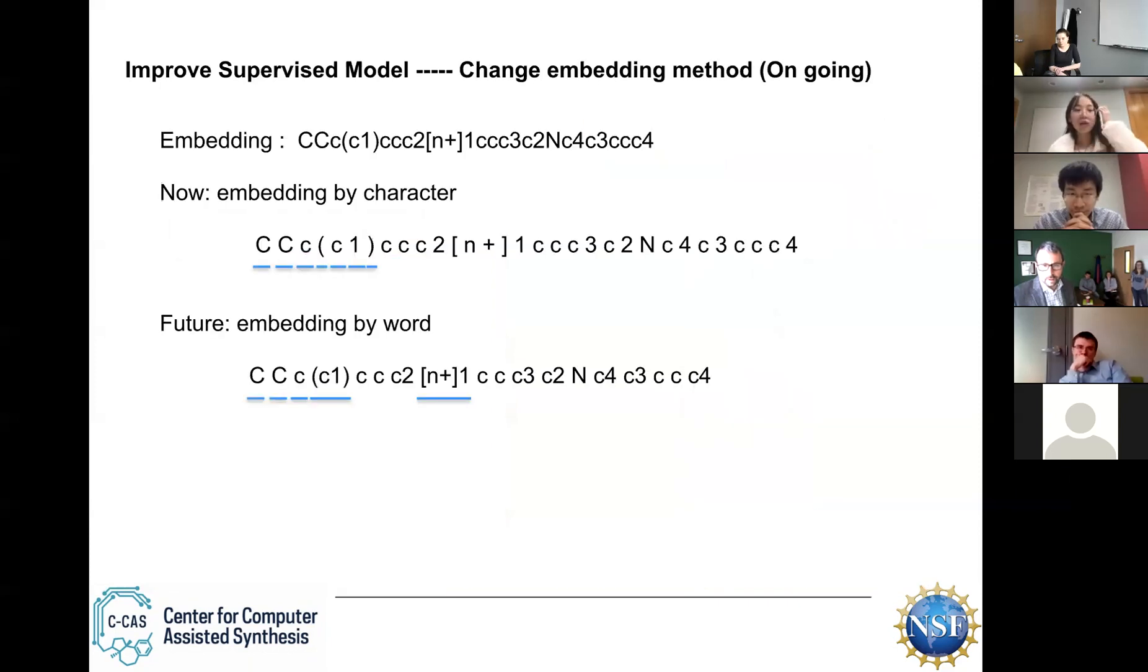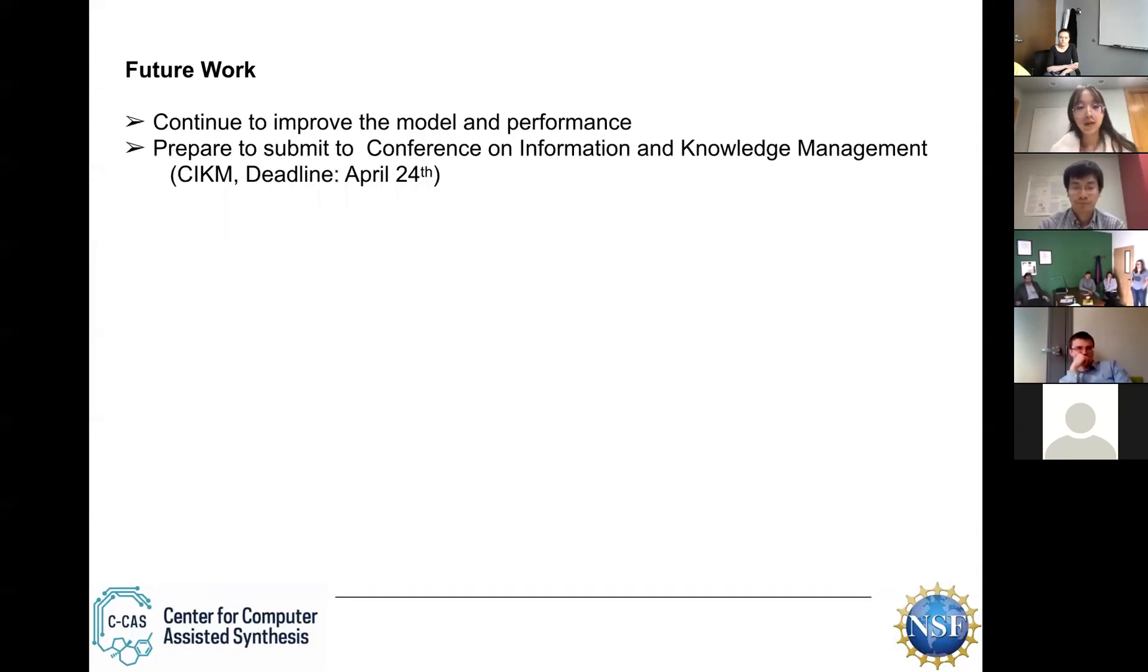And another way to improve the model is, this is ongoing, I want to change the embedding method. What I'm doing now is to embed by character. We consider each character as a node and give each node an embedding. As we know, for example, for the bottom line, we can see for N plus 1. It is better to embed as a group for this one because this one has particular properties. So what we want to do is to learn how to construct a SMILES string. And after we're learning that, we want to embed this by word, but not by character. So the future work is we will continue to improve the model and the performance. And we want to make the model more interpretable.